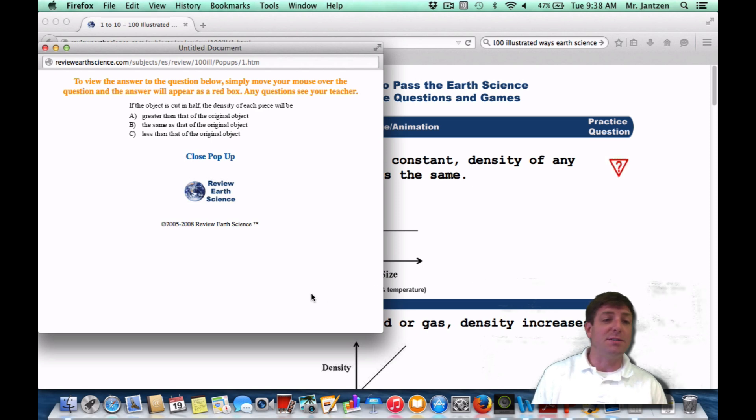If you're going to see this as a practice question on the Regents, it says if the object is cut in half, the density of each piece will what? Well, if it has that constant temperature and pressure, then you're going to have it be the same as the original object. So if you cut it in half, chop it up, put it against the wall, doesn't matter. The density will remain the same.